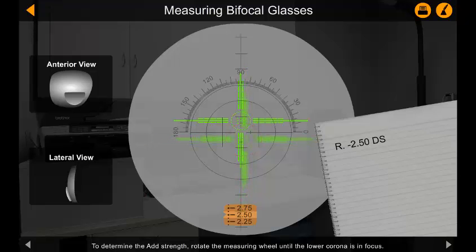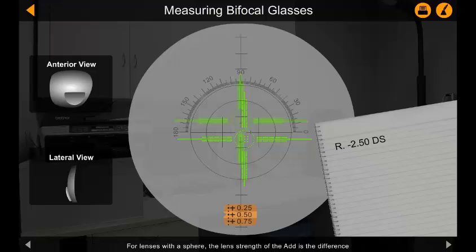To determine the add strength, rotate the measuring wheel until the lower corona is in focus. For lenses with a sphere, the lens strength of the add is the difference between the distance power and your current diopter scale value. The add in this example is therefore plus 3 diopter sphere.